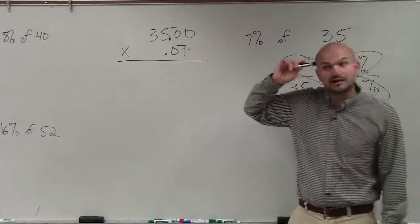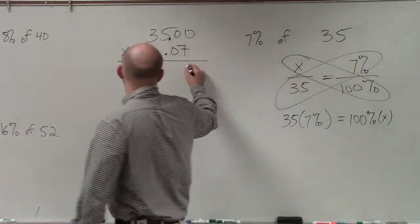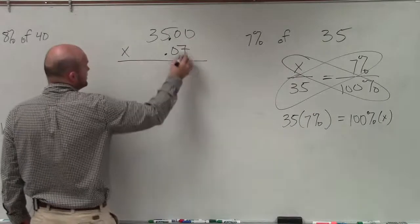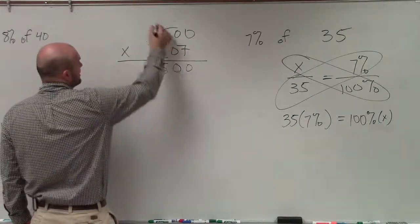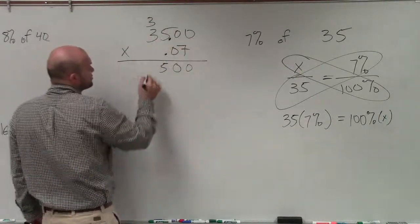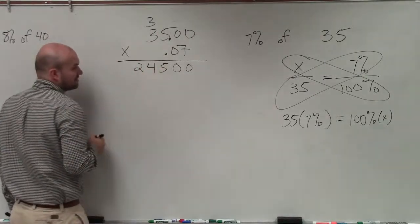So now I simply use my multiplication algorithm. Multiply 7 times 0 is 0, 7 times 0 is 0, 7 times 5 is 35, 7 times 3 is 21 plus 4 is 24.